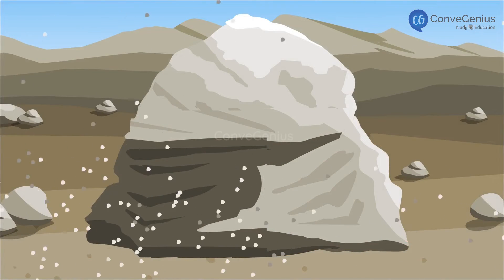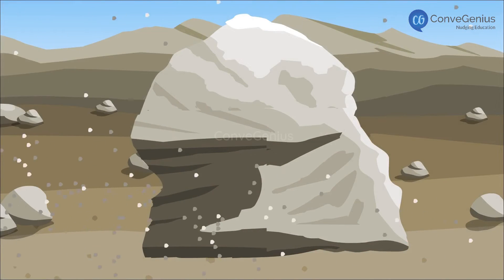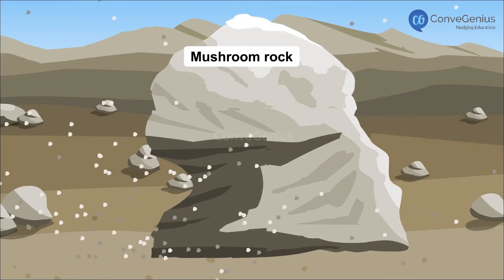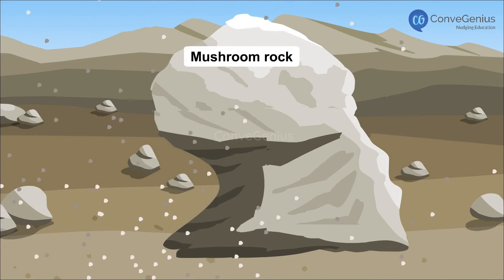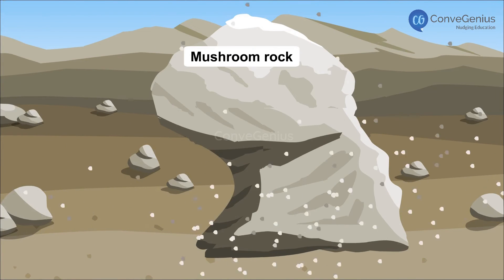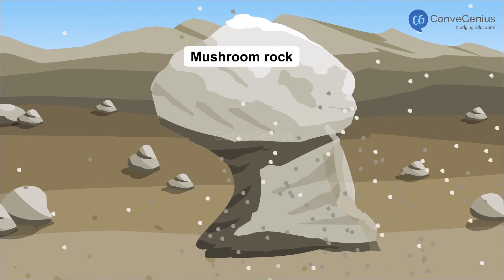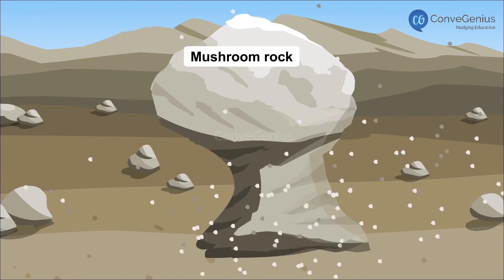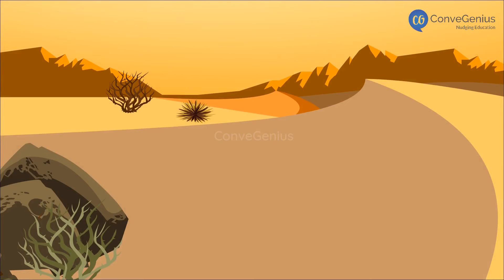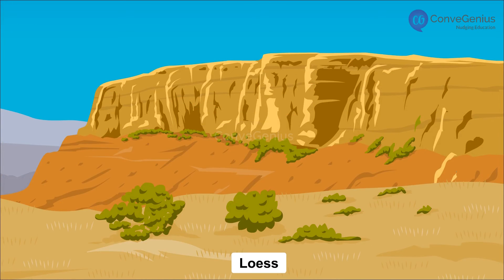For example, the wind erodes the lower portion of mushroom rocks found in deserts. These are shaped like mushrooms, and the wind carries the sand and fine material from these rocks to faraway places. When these get deposited, hill-like structures called sand dunes are formed. When the wind deposits the sand over large areas, large deposits called loess are formed.